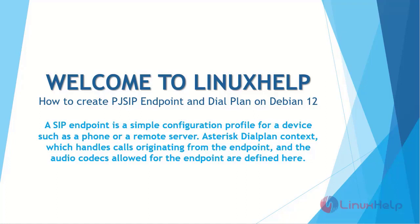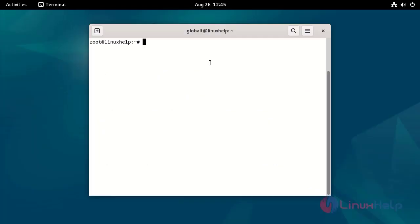Welcome to Linux Help. In this session, we are going to see how to create a PJSIP endpoint and dial plan on Debian version 12. A SIP endpoint is a simple configuration profile for a device such as a phone or a remote server. The Asterisk dial plan context, which handles calls originating from the endpoint, and the audio codecs allowed for the endpoint are defined here.